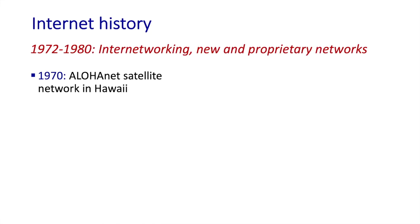ALOHANET was a microwave network linking universities on the Hawaiian Islands together. DARPA was building a second packet-switched network — a packet satellite network — as well as a packet radio network that's essentially the ancestor of today's cellular data networks. Ciclades was a French packet switching network. The number of networks was growing.